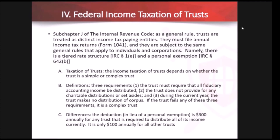Complex trusts are different. If all income in a given year is distributed out, the taxation rules are similar — there's a deduction for everything distributed. But if a complex trust distributes from corpus, or if capital gains are recognized at the trust level, the allocation depends on the trust document or the state's principal and income act. The exemption amounts differ: an estate gets $600 per year, a simple trust gets $300, and a complex trust gets $100 — these amounts were set in 1954 and haven't changed. If the trust's income is below its exemption threshold, no return is required.